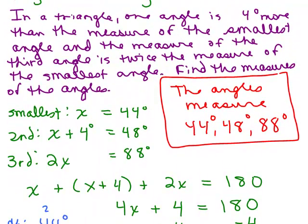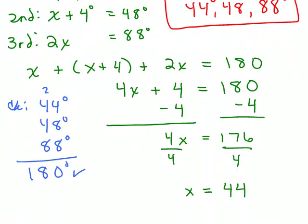Alright, that's the end of the problem, but I want to go back to something here. Our equation that we got when we had 4x plus 4 equals 180. Just show you another way to solve that equation. The way we did it was subtract 4 and then divide by 4. But I noticed that all the terms on both sides have a factor of 4. If you want, you could divide everything by 4 first and you get an easier equation.